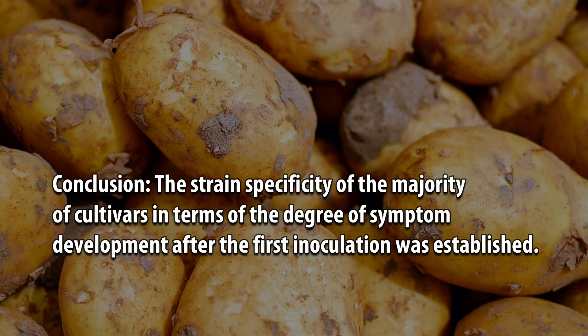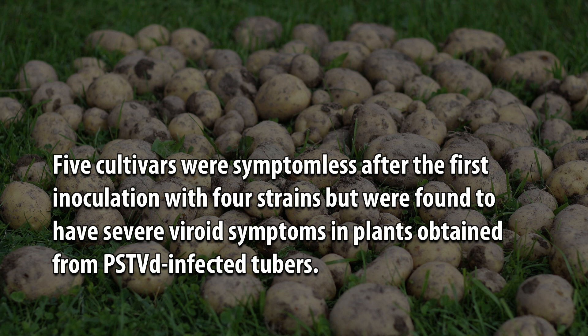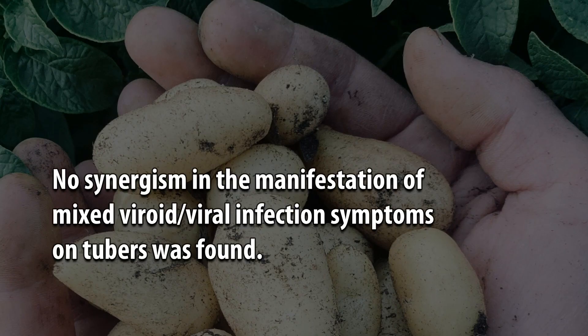Conclusion: The strain specificity of the majority of cultivars in terms of the degree of symptom development after the first inoculation was established. Five cultivars were symptomless after the first inoculation with four strains but were found to have severe viroid symptoms in plants obtained from PSTVd-infected tubers. No synergism in the manifestation of mixed viroid/viral infection symptoms on tubers was found.